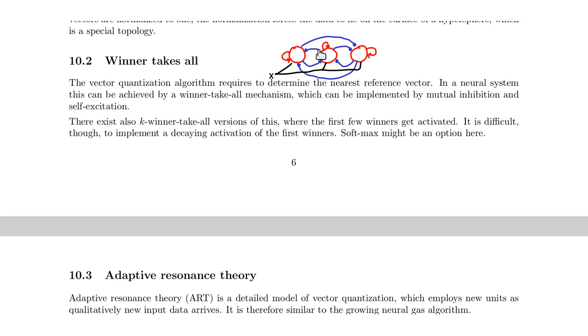And that way you can activate one neuron to then learn the input pattern. There's also a version called k-winner-take-all. So we have a winner-take-all mechanism. And there also exists a k-winner-take-all version, which would do this soft competitive learning.